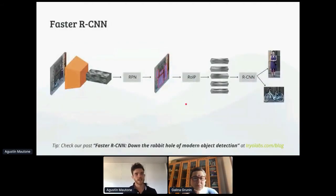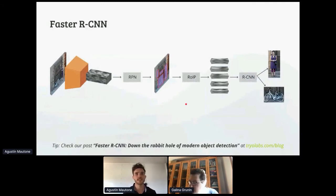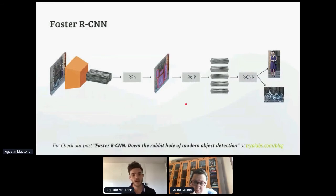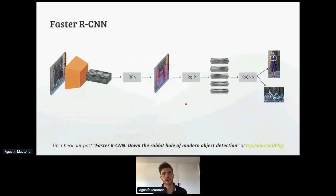For the modeling part, we decided to go with Faster RCNN, which is the network we have most experience with for object detection and we were confident in its ability to work with this data. I encourage you all to visit triallabs.com/blog — we have a blog there that explains how the model works and how it's trained. We got some awesome results.